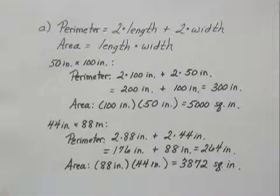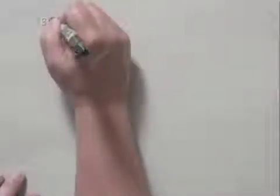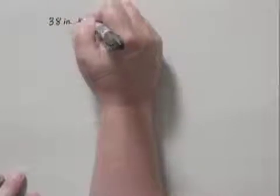Then we repeat this one more time for the third table. The third table, the dimensions were 38 inches by 76 inches.